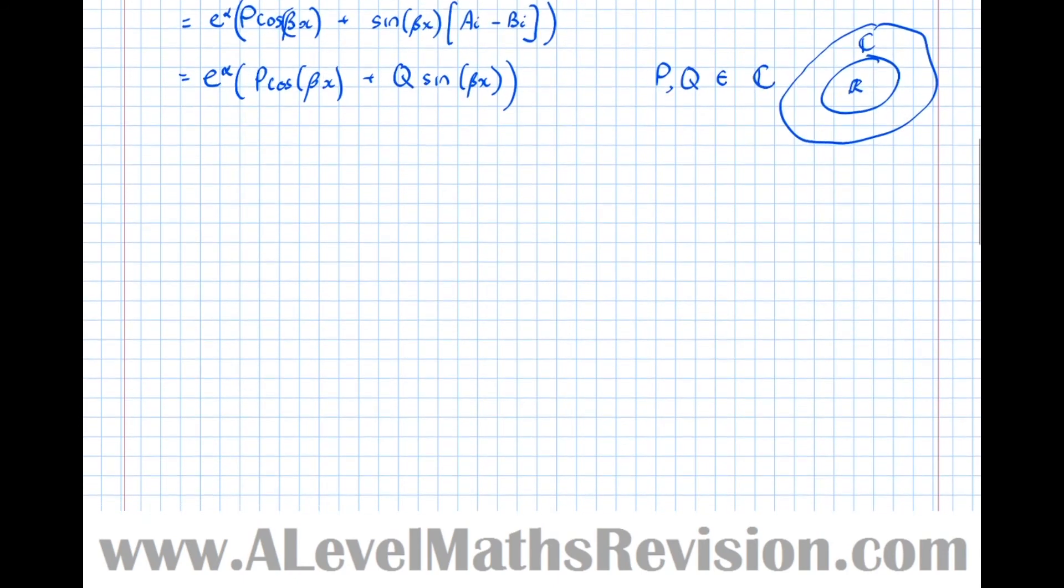So now let's do an example question. So there's an example question there. d²y/dx² + 4dy/dx + 13y = 0. OK, so now that I've got that, let's actually do the auxiliary equation. Let's solve it.